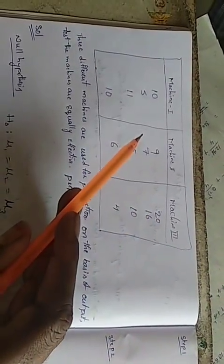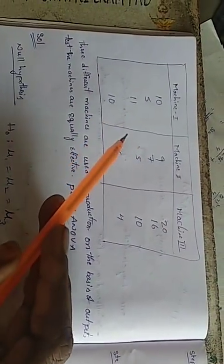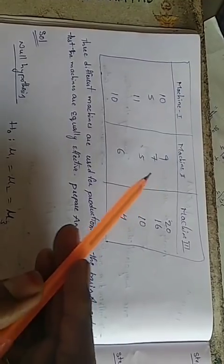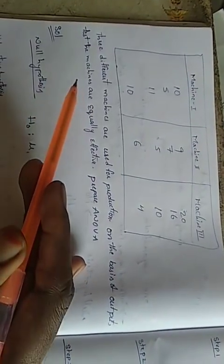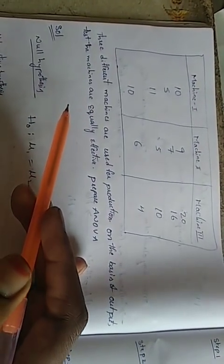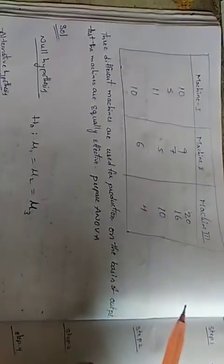Here is the problem: there are three different machines — machine one, machine two, and machine three — used for production. We need to test whether the machines are equally effective based on their output. We will apply one-way ANOVA classification.